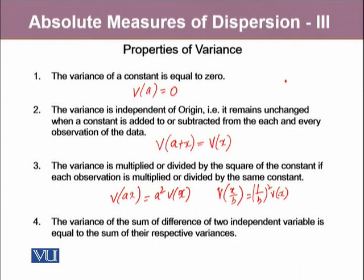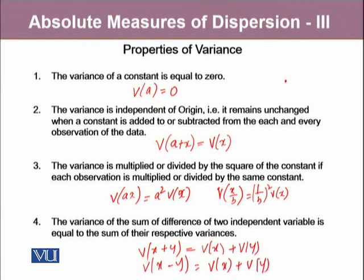And then lastly, the variance of sum of difference of two independent variables is equal to the sum of their respective variances. Like if there is variable x and variable y and both these variables are independent of each other, the variance of their addition should be equal to the addition of their independent variances. And the same is the case if there is a difference between two variables. It's again equal to the addition of both the variances.